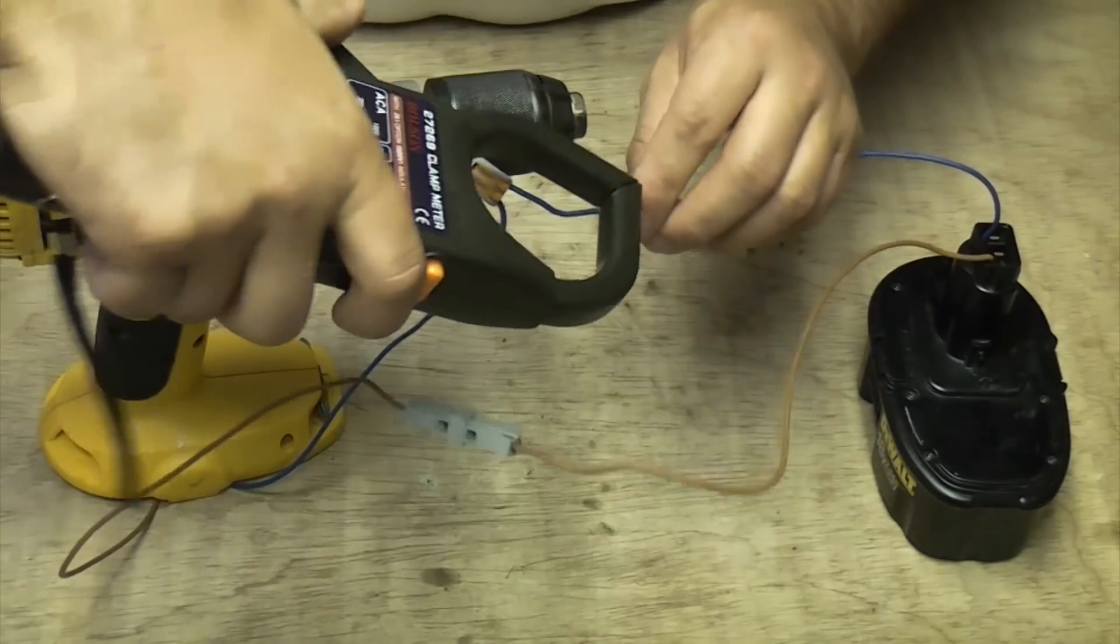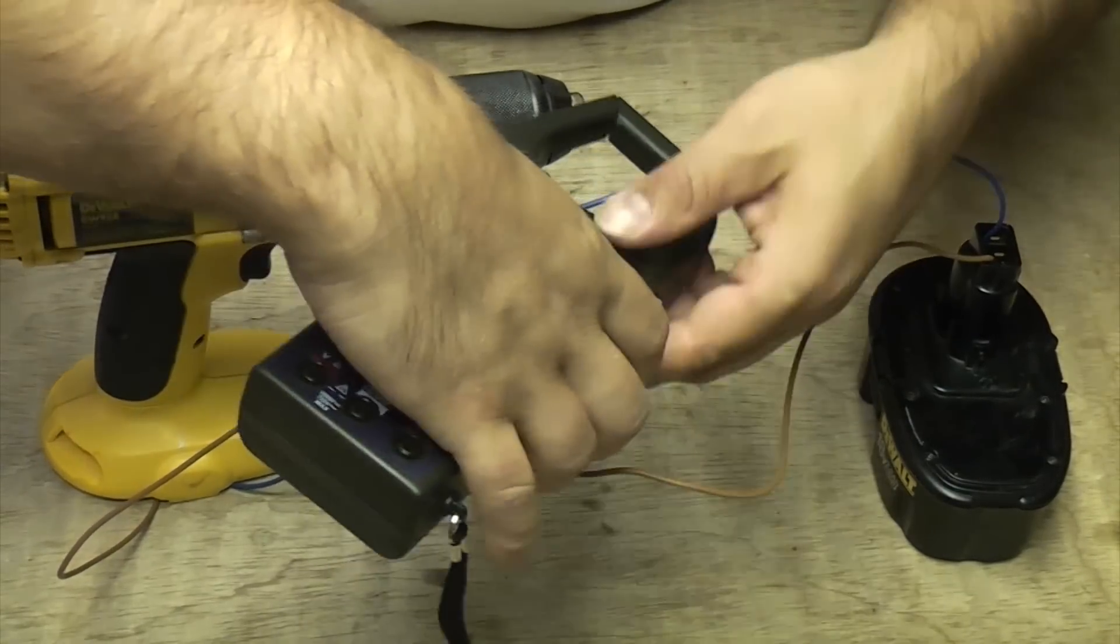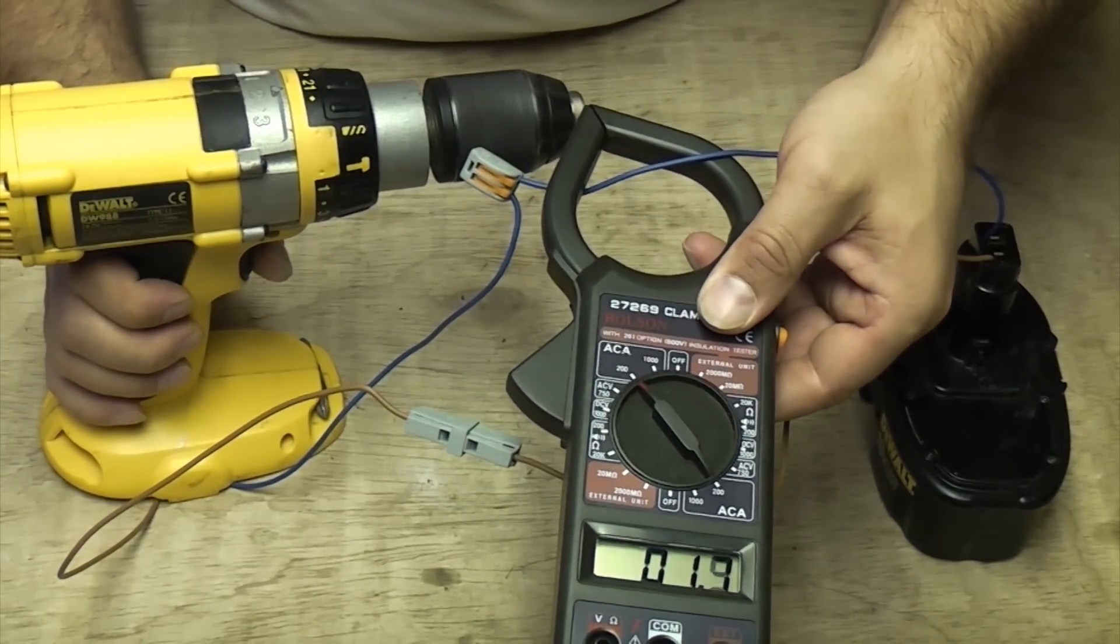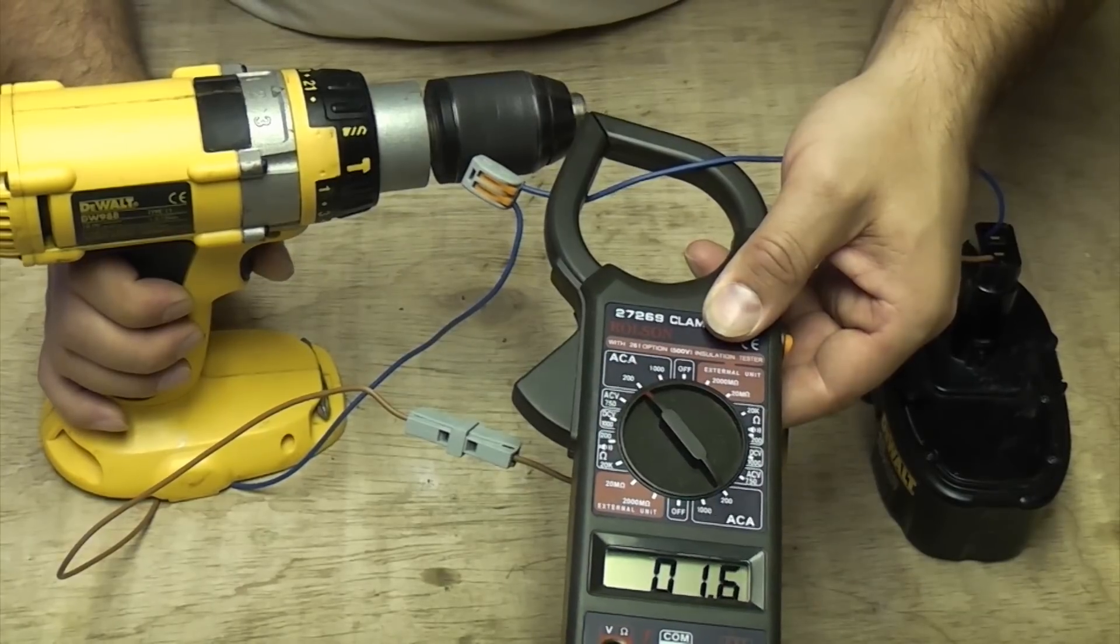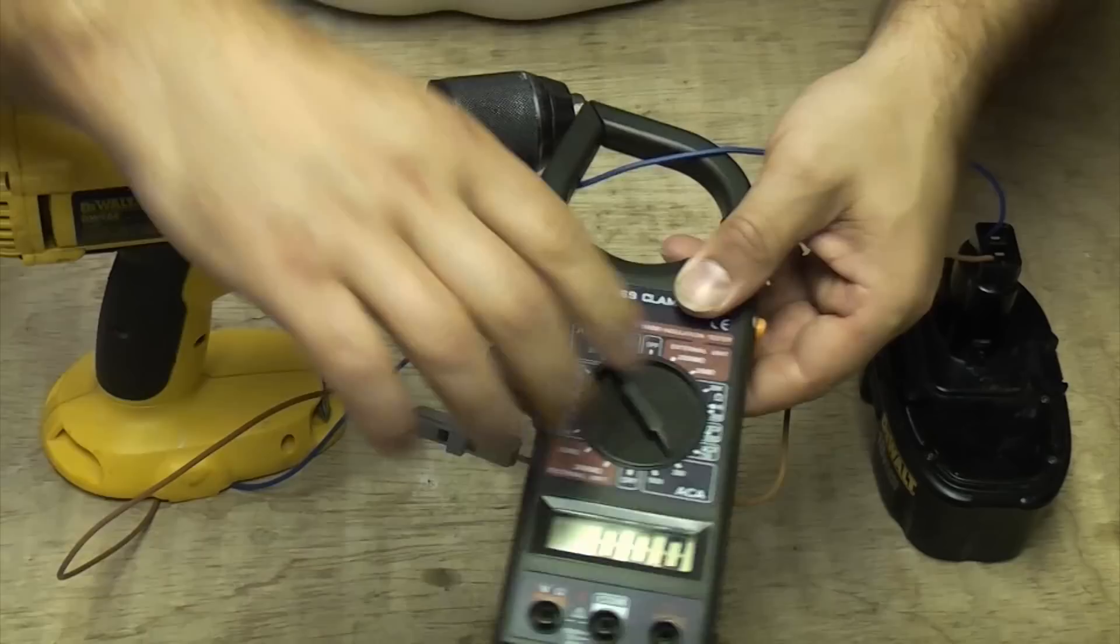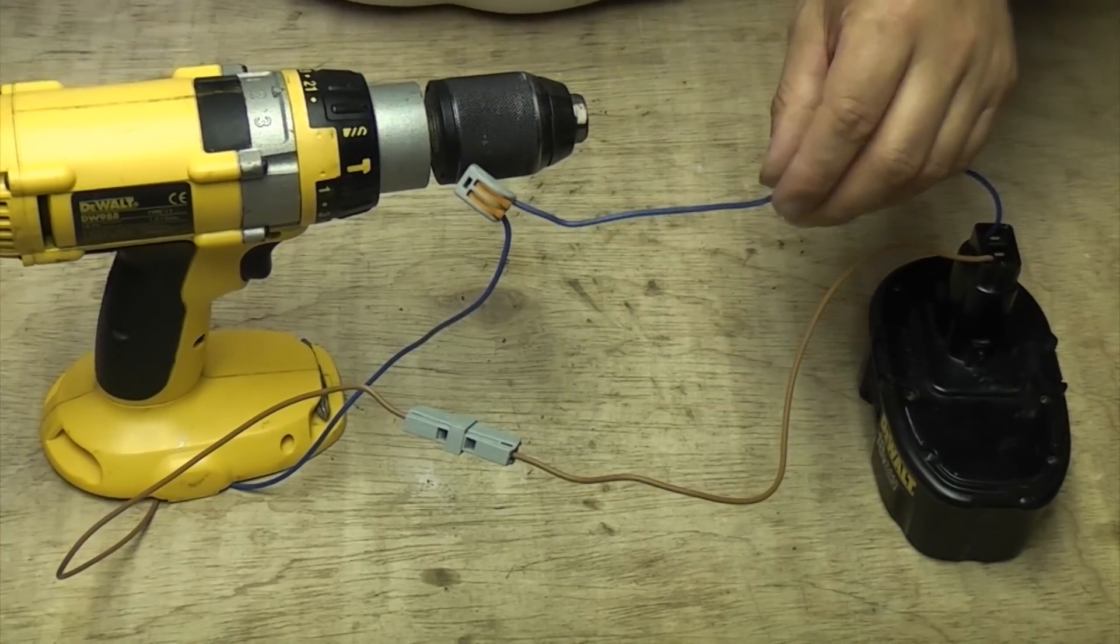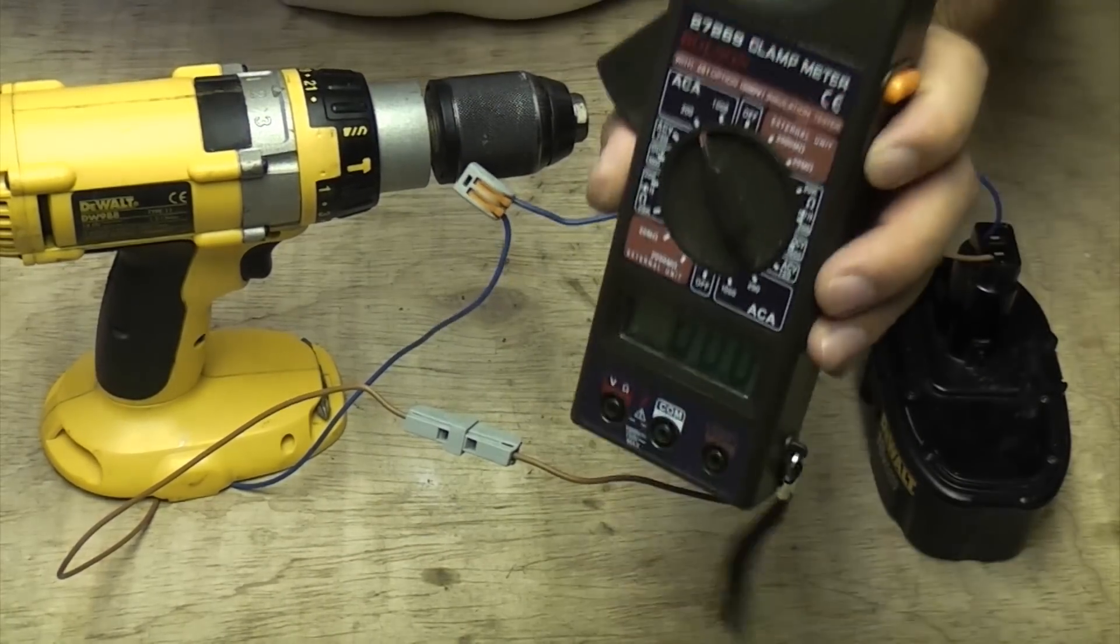So I'll just do that on the negative side now. So there you can see when you squeeze the trigger and you start pulling some amps through it, it does start giving you a reading although it won't be an accurate reading.